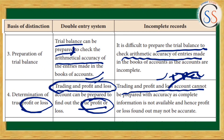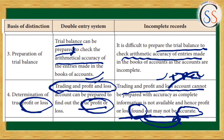In the Single Entry System, complete information is not available, hence profit and loss cannot be found accurately. In the Double Entry System, if we find the profit and loss, we get the perfect and true profit and loss.